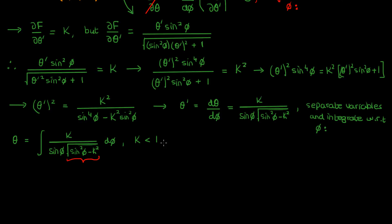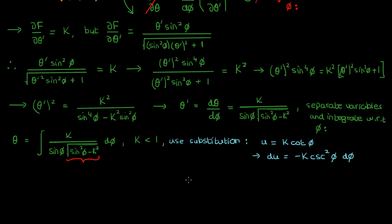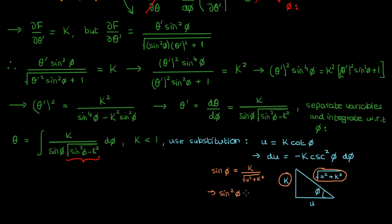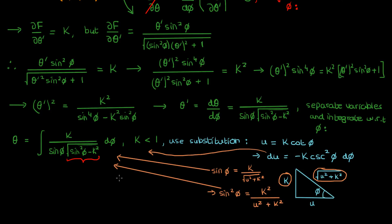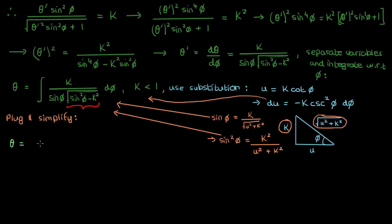So we've established that k is less than 1, but how do we solve this integral? We can use a substitution where we'll let some dummy variable u equal k times the cotangent of phi. In that case, du will just be negative k times the cosecant squared of phi d phi. Now before we replace all the phi's by u, we need to express sine phi in terms of u, since sine phi appears in our integral. That can be done just by using a right triangle. Since cotangent phi is u over k, sine phi is just k over the square root of k squared plus u squared, so sine squared phi would be k squared over k squared plus u squared. Now everything in phi is in terms of u, so we can plug all of this into our integral, and once we simplify everything, here's what we'll get: theta equals the negative integral of du over the square root of 1 minus k squared minus u squared.